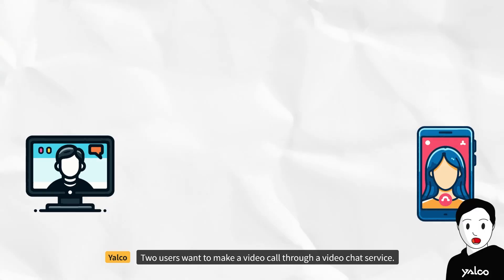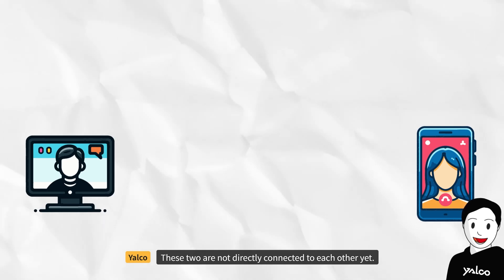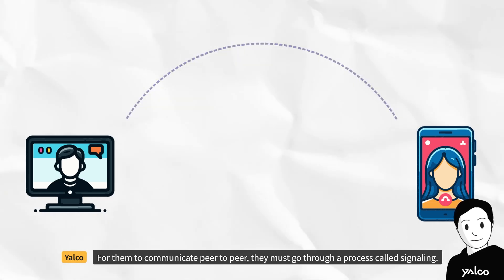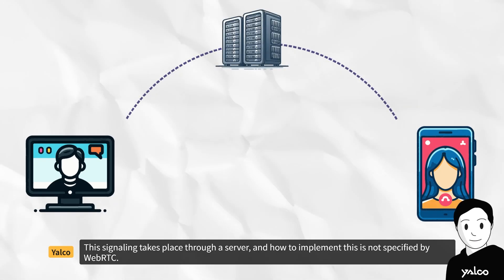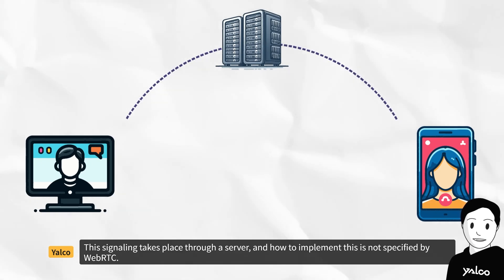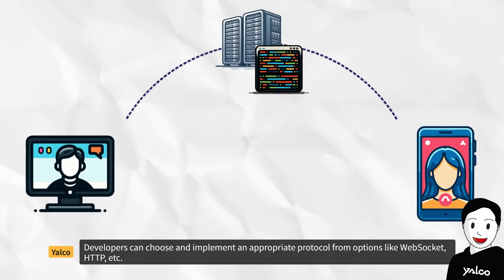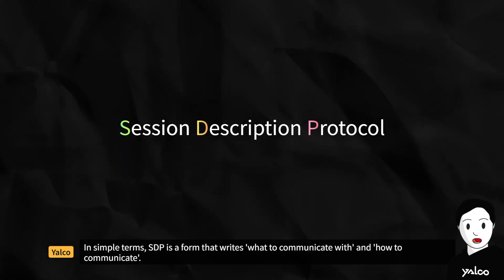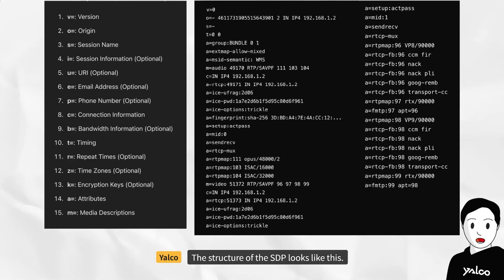Let's find out how WebRTC works. Two users want to make a video call through a video chat service, but they are not directly connected to each other yet. For them to communicate peer-to-peer, they must go through a process called signaling. Signaling is the process where the two clients agree on what to communicate and how to communicate. This signaling takes place through a server, and how to implement it is not specified by WebRTC — developers can choose an appropriate protocol from options like WebSocket, HTTP, etc. Signaling employs a protocol called SDP.